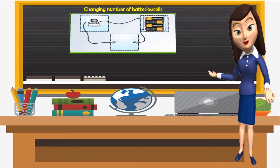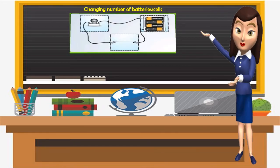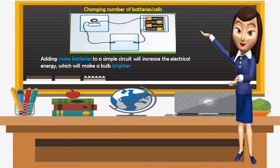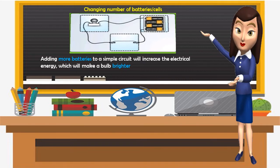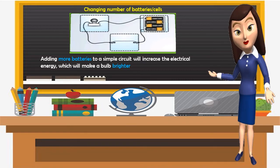Changing the number of batteries or cells: adding more batteries to a simple circuit will increase the electrical energy, which will make a bulb brighter.